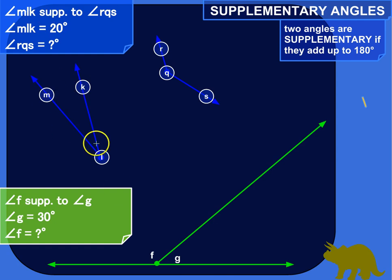So this angle would be called MLK. It's important that you name the vertex as the middle letter. You could call this angle KLM. Either way, the important thing is for the vertex to be in the middle and for you to name the points on the rays that form the angle. So here's MLK. And here's RQS or SQR, if you want to call it that.